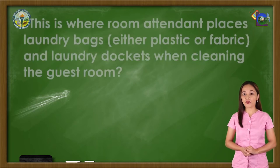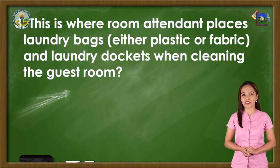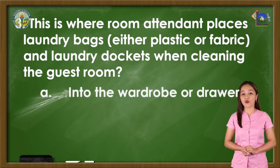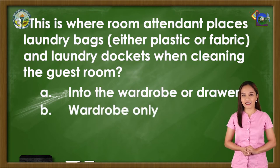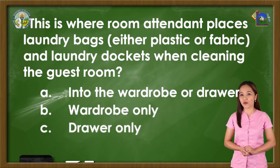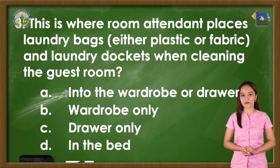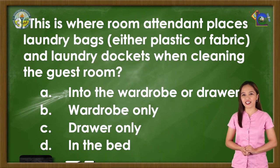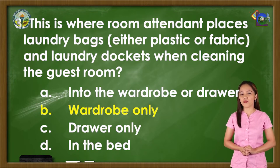Number 3: This is where the room attendant places laundry bags, either plastic or fabric, and laundry dockets when cleaning the guest room. A. Into the wardrobe or drawer, B. Wardrobe only, C. Drawer only, or D. Bed. The correct answer is letter B, Wardrobe only.